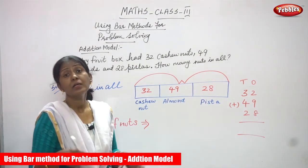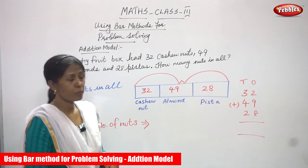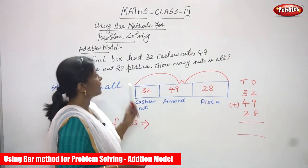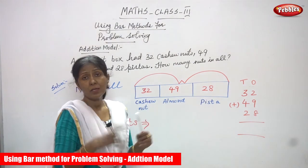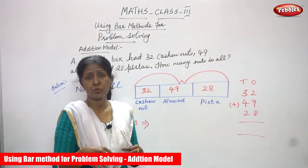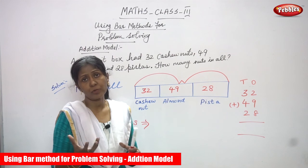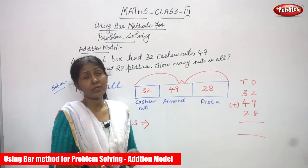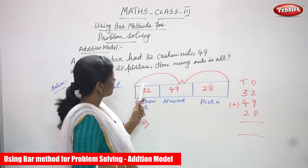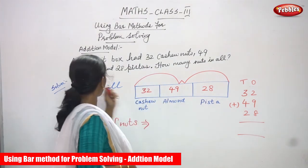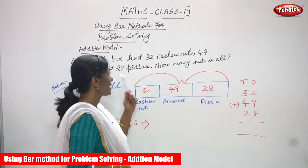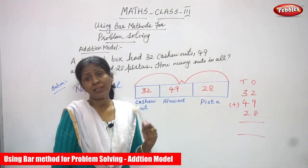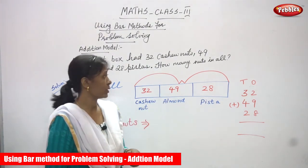I'll repeat once again. There is a dry fruit box, and in that box all the nuts are combined together. So you have to calculate the total number of nuts in the dry fruit box. In that dry fruit box: 32 cashew nuts, 49 almonds, and 28 pistas. How many nuts in all — that means the total number of nuts you have to find out.